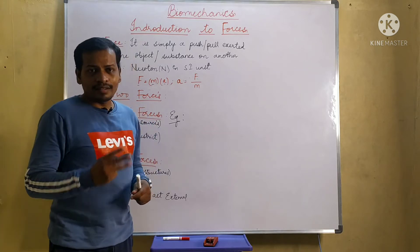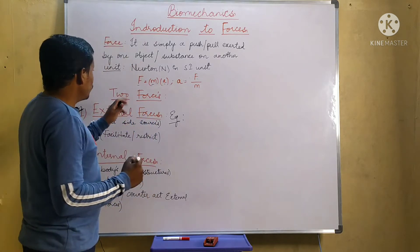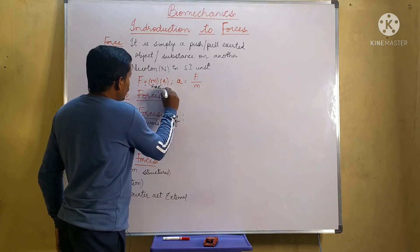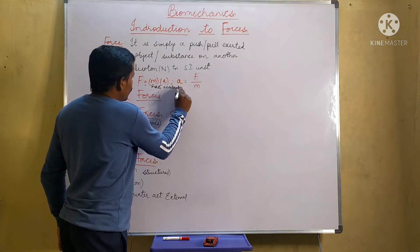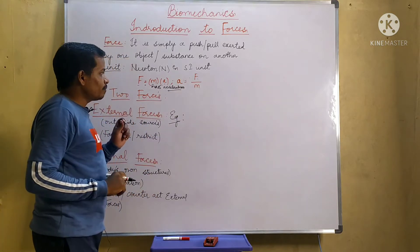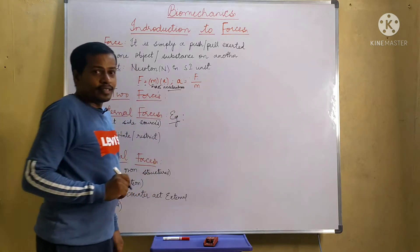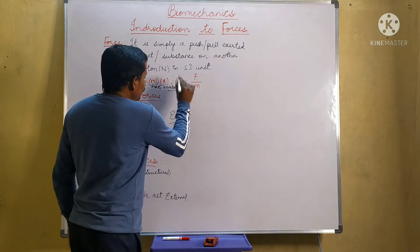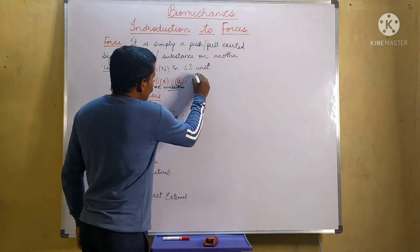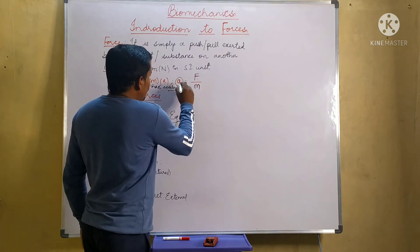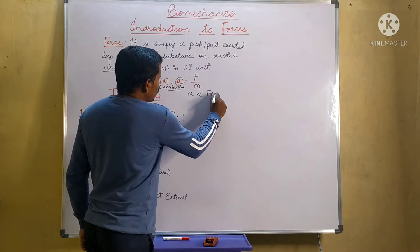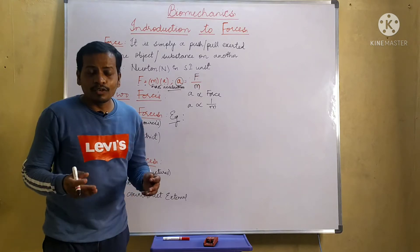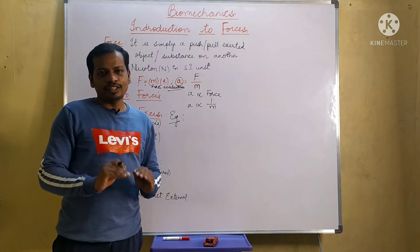Now let us see the equation of force. Force is equal to mass multiplied by acceleration, where mass is measured in kilograms or pounds, and acceleration is the change in velocity per unit time. Acceleration equals force divided by mass. Acceleration is directly proportional to force and inversely proportional to mass — as the mass of the body increases, the acceleration decreases.